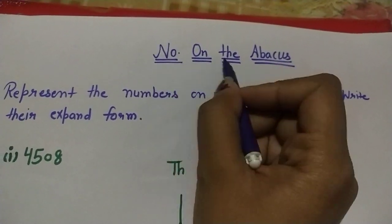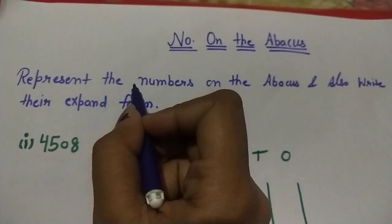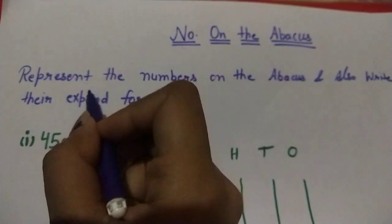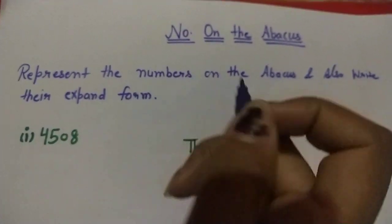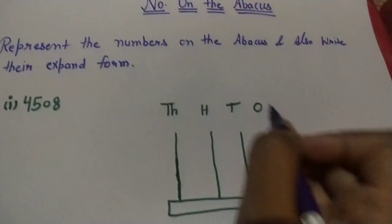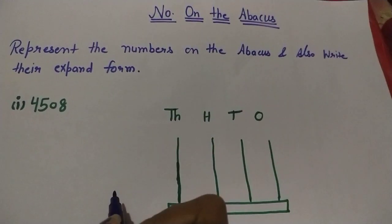Everyone, today's topic is number on the abacus. First we represent the number on the abacus and also write their expanded form. First we have to represent the number in abacus and write it in the expanded form.